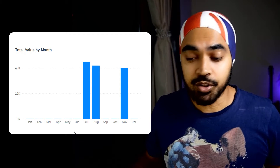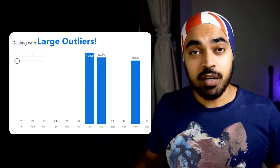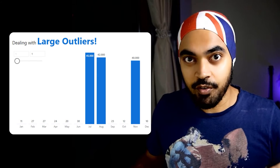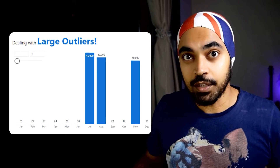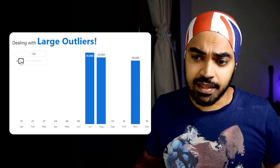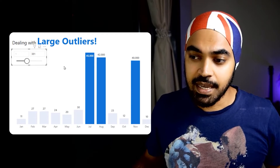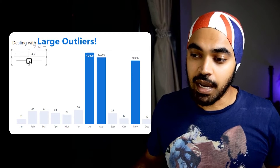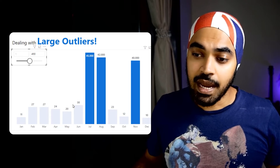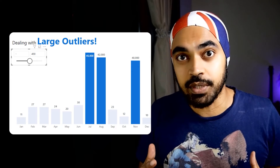Perhaps we can do something about the chart and make it look something like this. In this improved chart we can give a little lift to the small values so that they become slightly more significant. Even though I can see the outliers highlighted in blue, I can still see that the smaller values are now becoming more legible to read. Let's see if we can create a chart like this in this video.